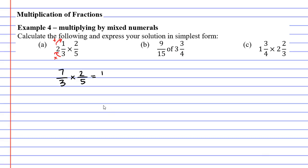7 times 2 at the top gives us 14 and at the bottom of the fraction 3 times 5 is 15. This gives our solution for question A.